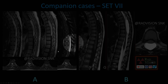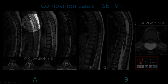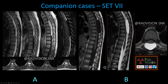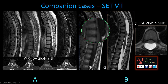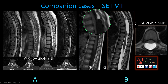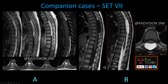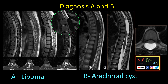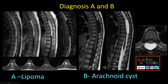Next case shows a cystic lesion in the intradural extramedullary location, hyperintense on T2, hyperintense on T1, and completely suppressed on fat-suppression sequences, causing displacement of the spinal cord to the left — this is a spinal lipoma. The second case shows a cystic lesion in the extradural location causing displacement of the spinal cord, hyperintense on T2 but not suppressed on fat-suppression sequences — this is an arachnoid cyst.